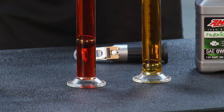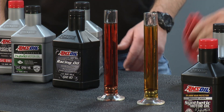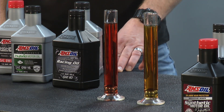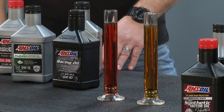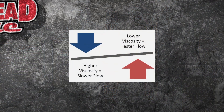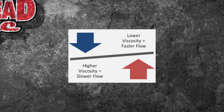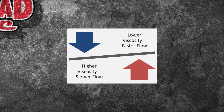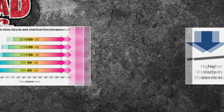Man, look at the difference. That one went down in no time. You lost. Why is that? Well, I lost because that 60 weight is a thicker oil. It is a thicker oil and our chart actually showed you that perfectly. The high viscosity, the slower the flow. Lower viscosity, faster the flow.